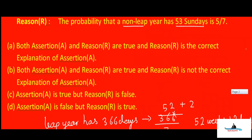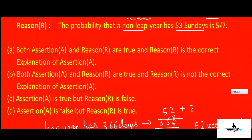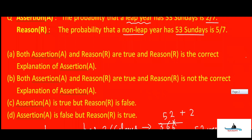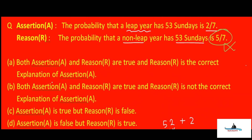So analyzing the choices: the reason states five by seven for a non-leap year, which is absolutely wrong. The reason is false. The assertion is true. When the reason is false, it cannot be a correct explanation for the assertion. Therefore the answer is: assertion A is true, but reason R is false — that is option number C.